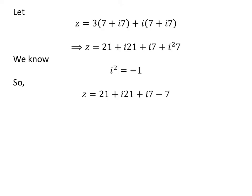So, application of the above property of imaginary unit gives us z = 21 + i21 + i7 - 7. Putting together like terms gives us z = 14 + i28.